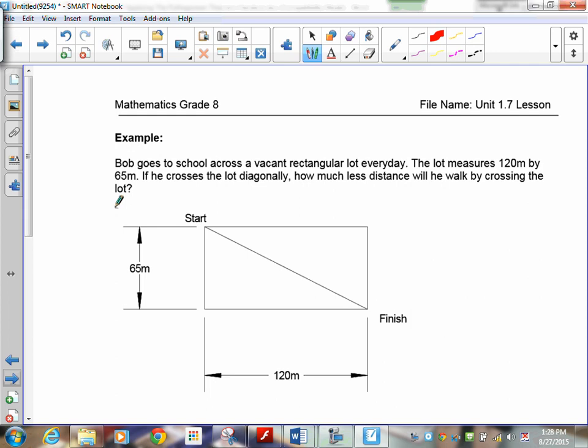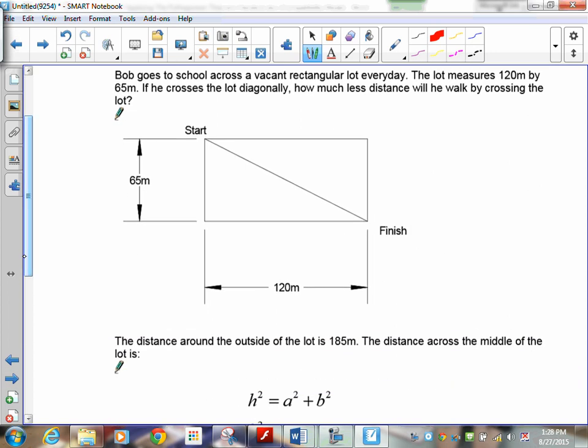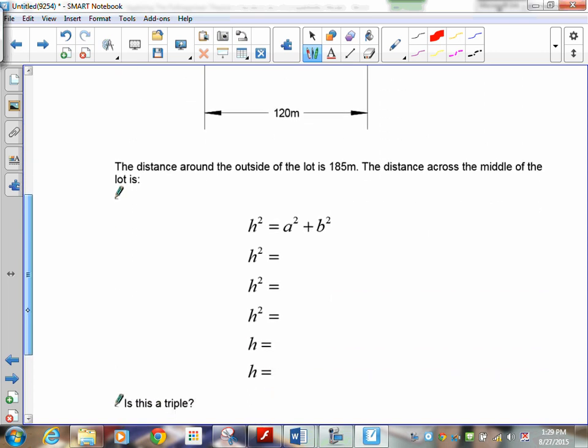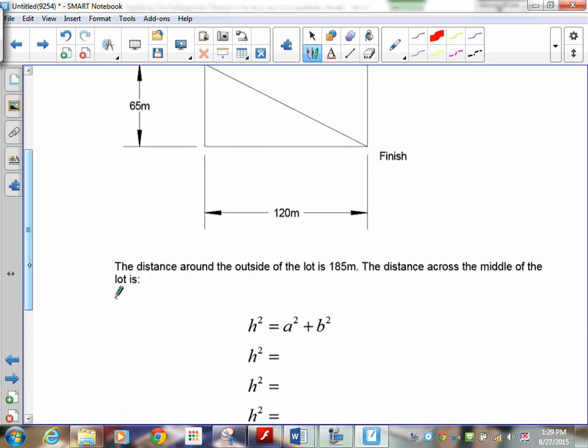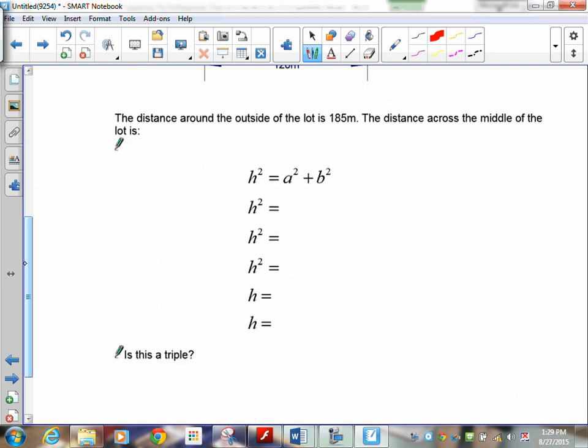Bob goes to school across the Walmart rectangular lot every day. The lot measures 120 meters by 65 meters. If he crosses the lot diagonally, as the start and finish shows, how much less distance will he walk by going across the lot rather than going around it? So, I'm going to give you a second. I want you to find out what the diagonal distance across that is. Here is your h, your diagonal, your hypotenuse. Pause the recording and do this calculation.